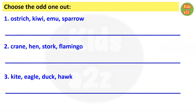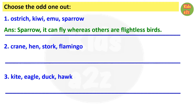In this worksheet kids need to identify the odd one and write the reason. First one is ostrich, kiwi, emu and sparrow. The odd one is sparrow because it can fly, whereas the others are flightless birds — ostrich, kiwi and emu cannot fly.